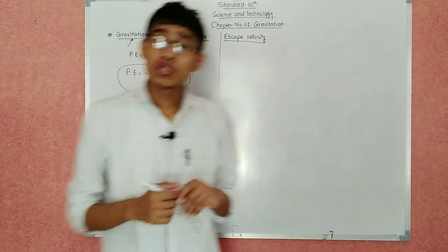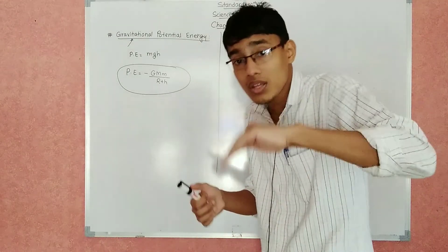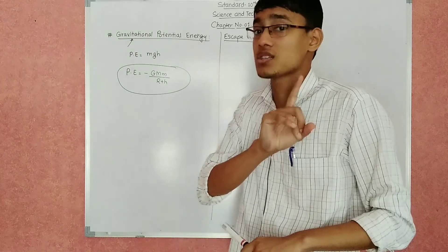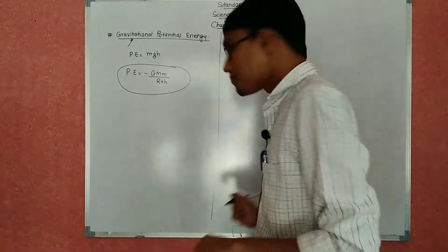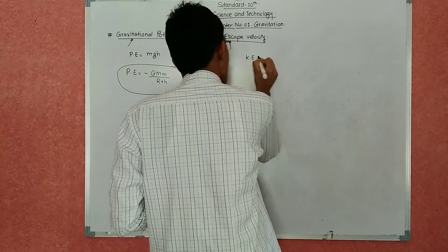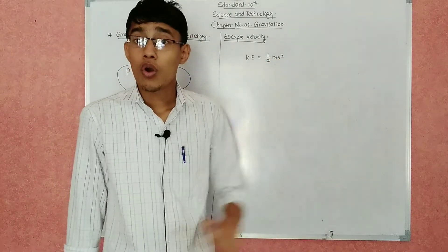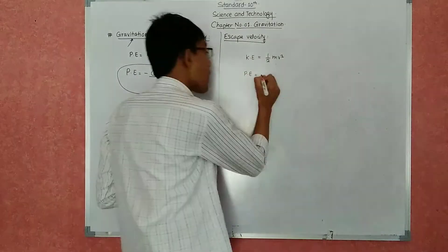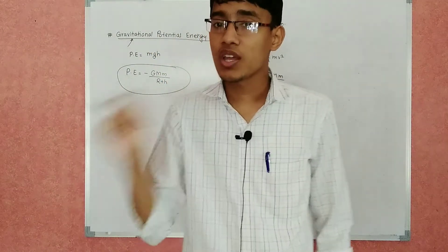How do we find escape velocity? If we want to bring any object outside of Earth's gravitational influence, the object's motion will start from the Earth's surface and it can travel to an infinite distance. On the Earth's surface, the kinetic energy of the object will be ½mv², and the potential energy will be −GMm/r (since at the surface h = 0).